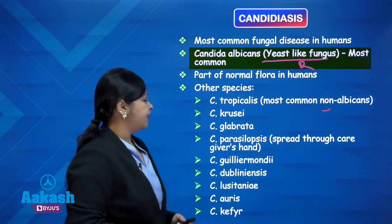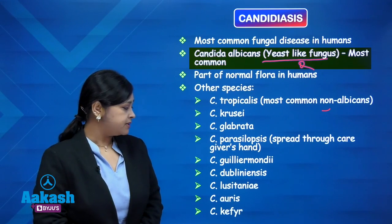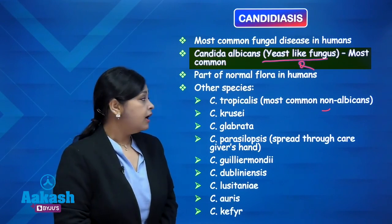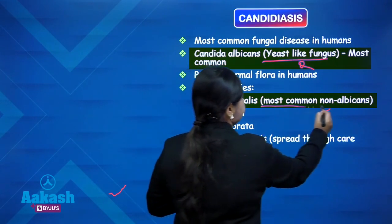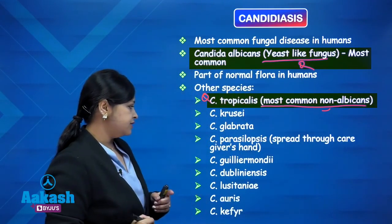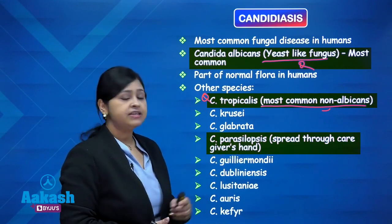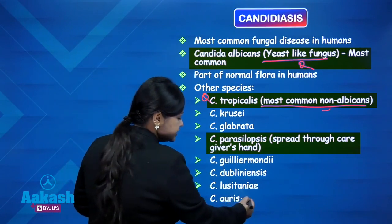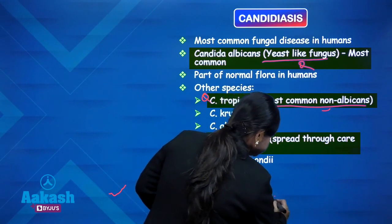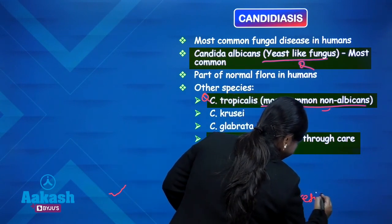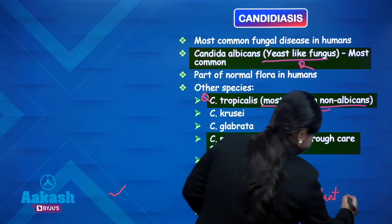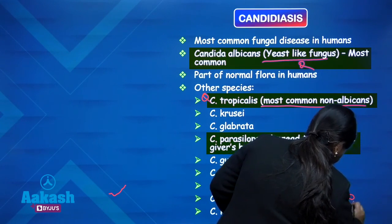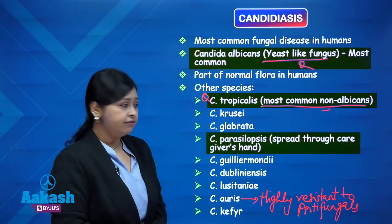The non-albicans Candida species are: Candida tropicalis, Candida krusei, Candida glabrata, Candida parapsilosis, Candida guilliermondii, Candida dubliniensis, Candida lusitaniae, Candida auris, and Candida kefyr. Candida tropicalis is the most common non-albicans species causing human infections. Candida parapsilosis is known to spread through caregivers' hands, playing a major role in hospital outbreaks particularly in neonates. Candida auris is a highly resistant species that causes nosocomial outbreaks and is very difficult to treat.